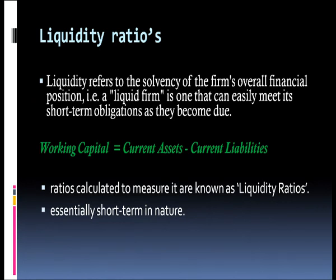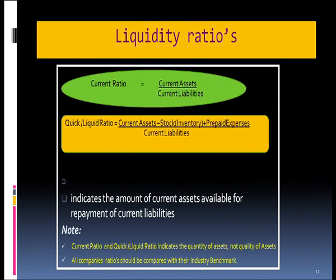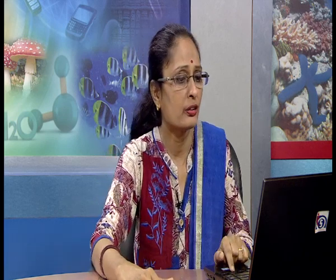We calculate current assets divided by current liabilities to get the current ratio. It indicates the amount of current assets available for repayment of short-term obligations. The ideal ratio is 2:1, but we would always like to benchmark it with the industry or our competitors so that we are always better than them.